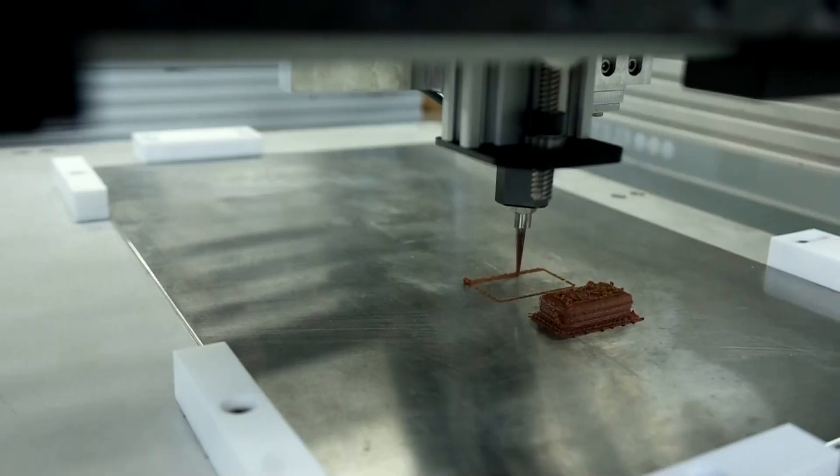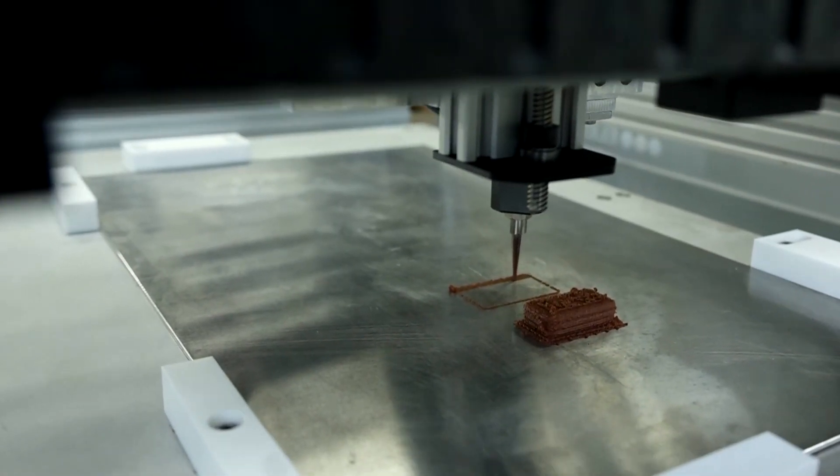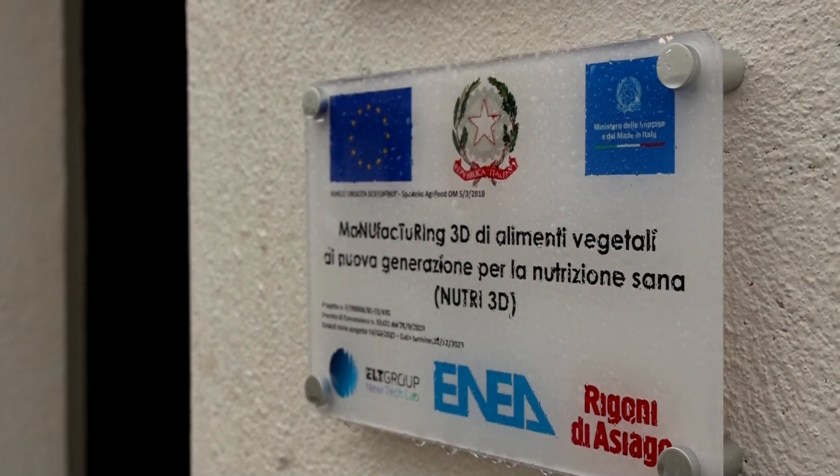This is fruit for astronauts. We clearly cannot take fresh fruit on board, but through a 3D printer of this type, they can feed themselves with the nutritional properties of fresh fruit.